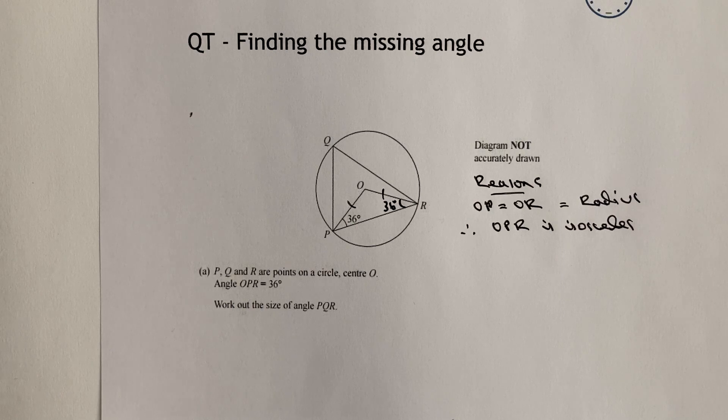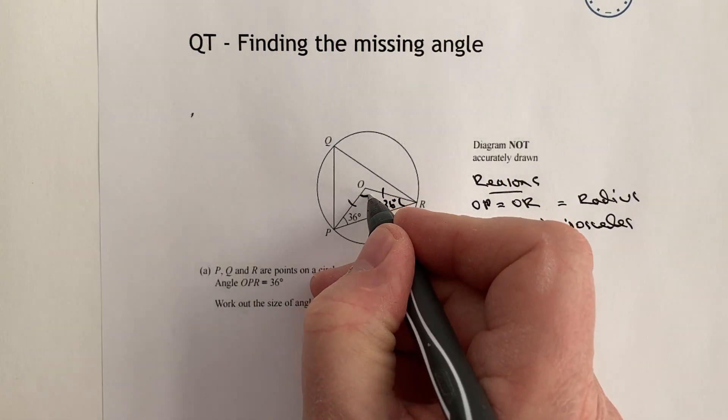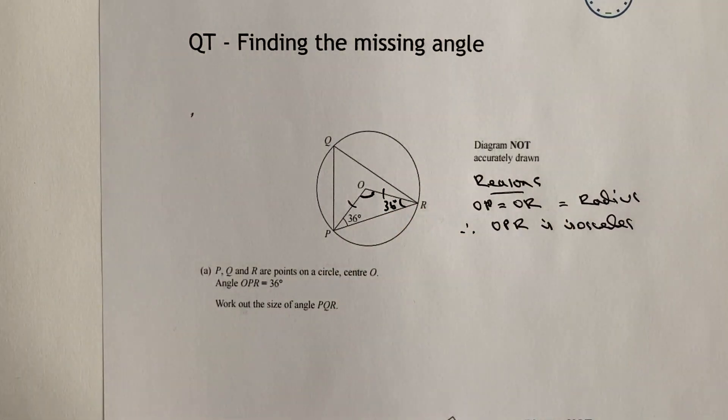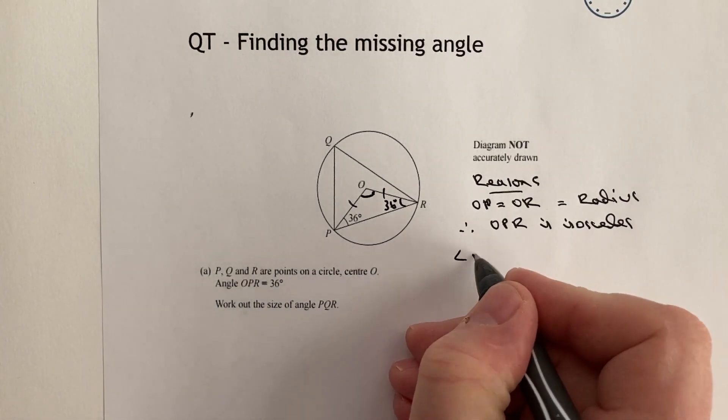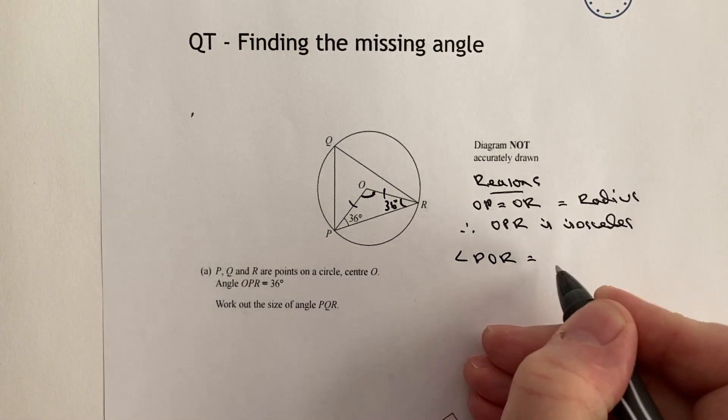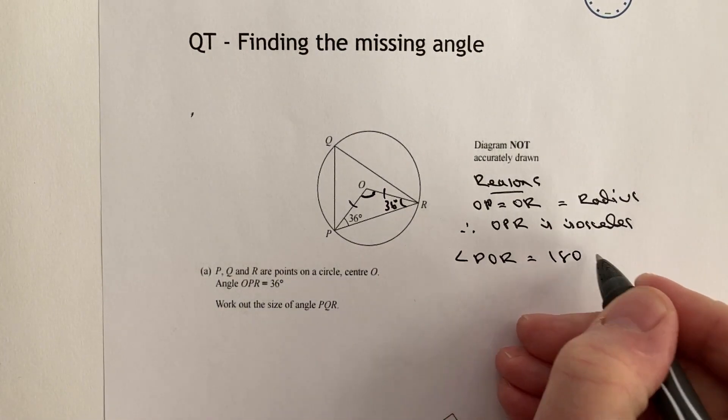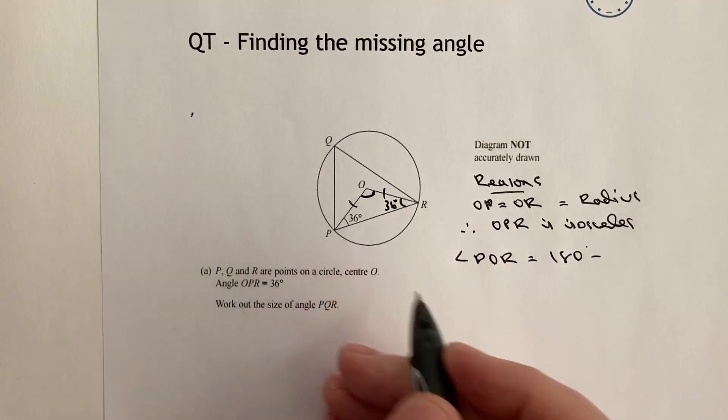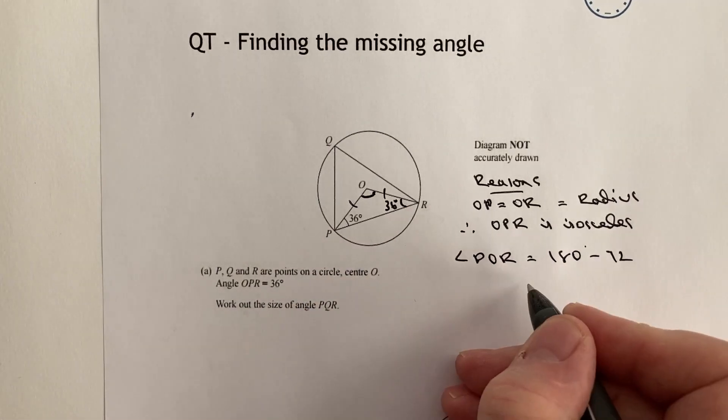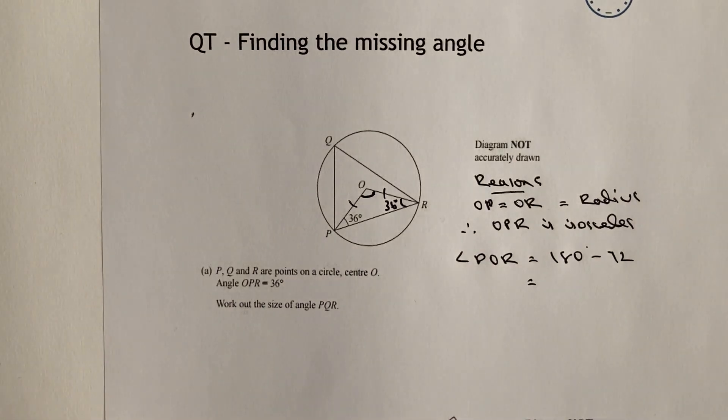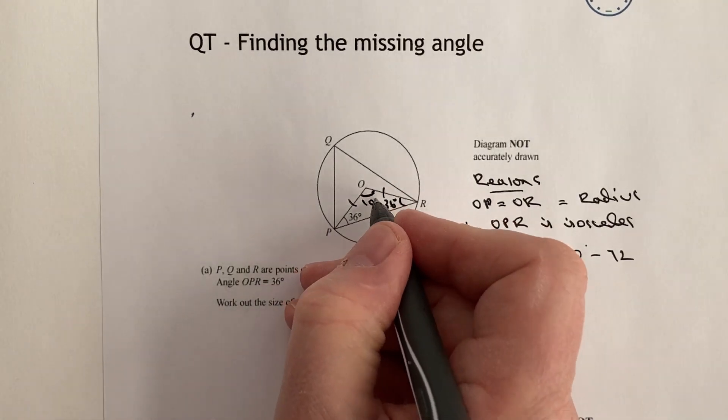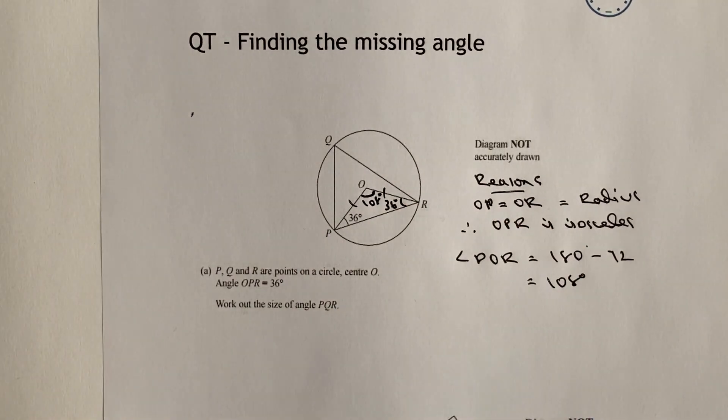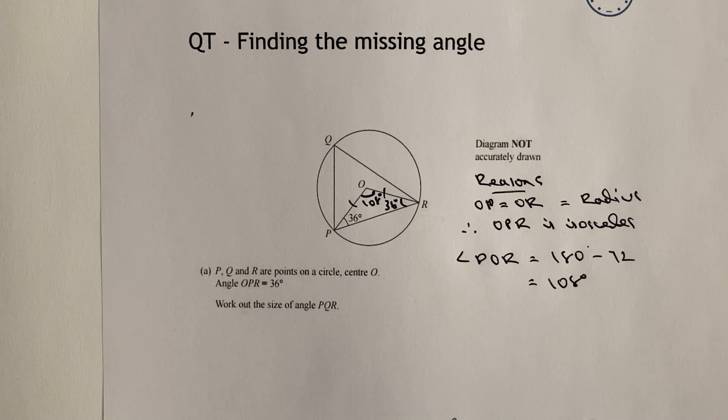That will allow us then to work out the top angle which is this one here, and the way we can do that is that angles in a triangle add up to 180 degrees, so angle POR equals 180 degrees minus 36 and 36 which is 72, so therefore the angle at the top here is going to be 108 degrees.